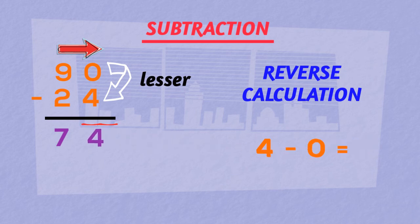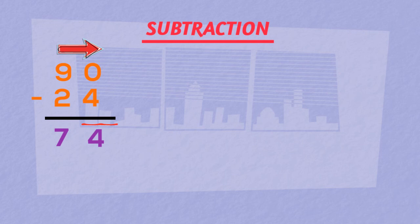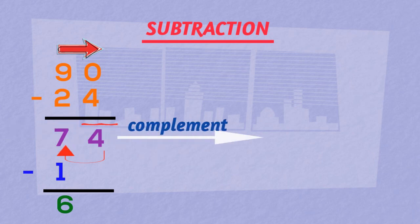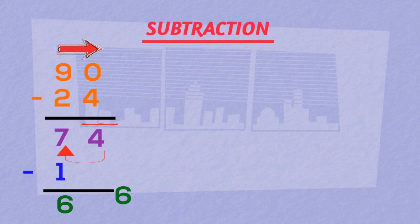Now the next step. The number before the bar will get reduced by 1. So this 7 becomes 6 and complement of 4 is 6. Our answer 66.